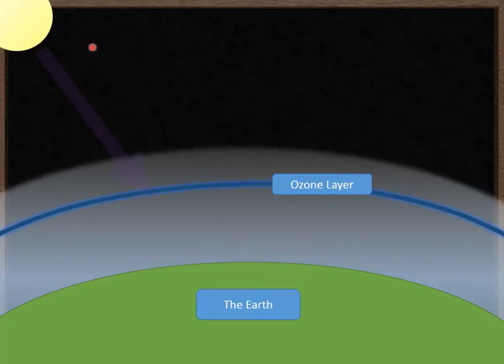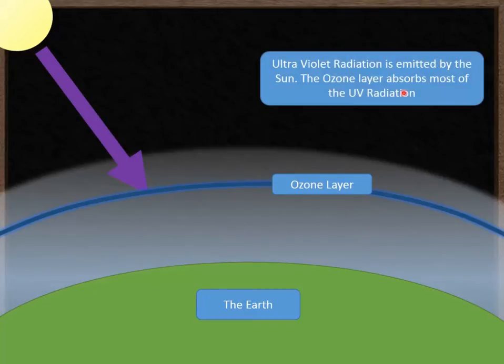So what happens is the sun emits UV radiation. Quite a lot of that UV radiation is high energy and quite dangerous. So as that UV radiation impacts the ozone layer, the ozone layer absorbs most of that harmful UV radiation.